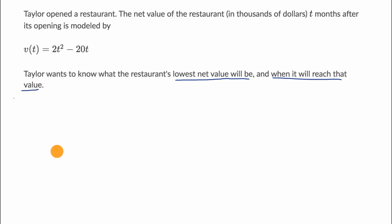Let's break it down step by step. The function describes how the net value of the restaurant changes over time. If I were to graph it, I can see that the coefficient on the quadratic term is positive, so it's going to be some form of upward opening parabola. It's going to have some point, the vertex of this parabola, where it's going to hit its lowest net value at some time t.